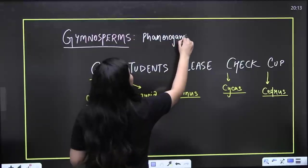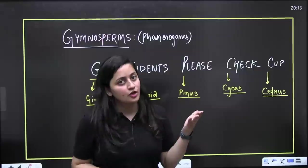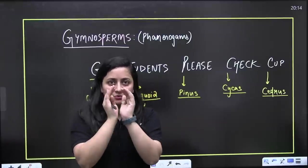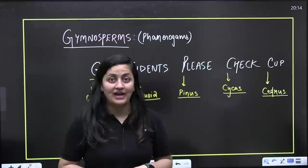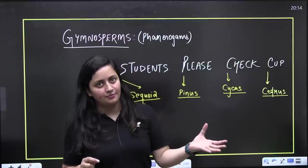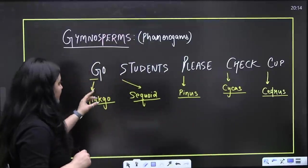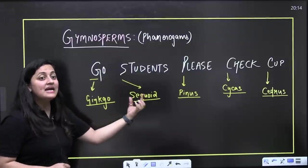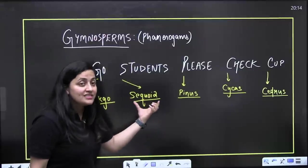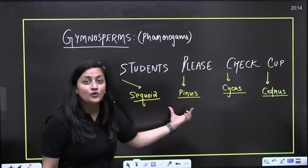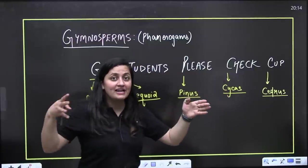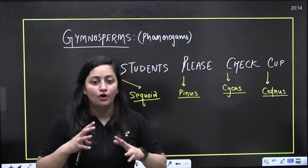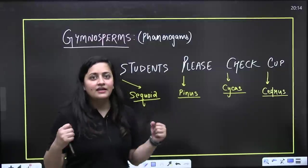Gymnosperms are phanerogams — they produce seeds, but the seeds are naked. Both gymnosperms and angiosperms are phanerogams (also called Spermatophyta). The trick for gymnosperms is 'Go Students Please Check Up': G for Ginkgo — a living fossil; S for Sequoia — the tallest plant, the giant redwood; P for Pinus — monoecious; C for Cycas — a living fossil, dioecious with separate male and female plants; and the last is Cedrus.